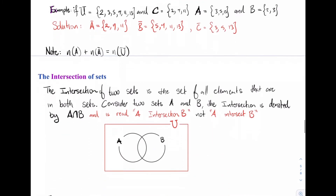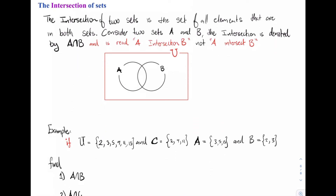Moving along, we now examine the intersection of two sets. The intersection of two sets is the set of all elements that are in both sets. When we think about set A and set B, we want all elements common to both A and B — that section is what we call the intersection. The intersection is denoted by A ∩ B, using the intersection symbol, and we read this as 'A intersection B.'